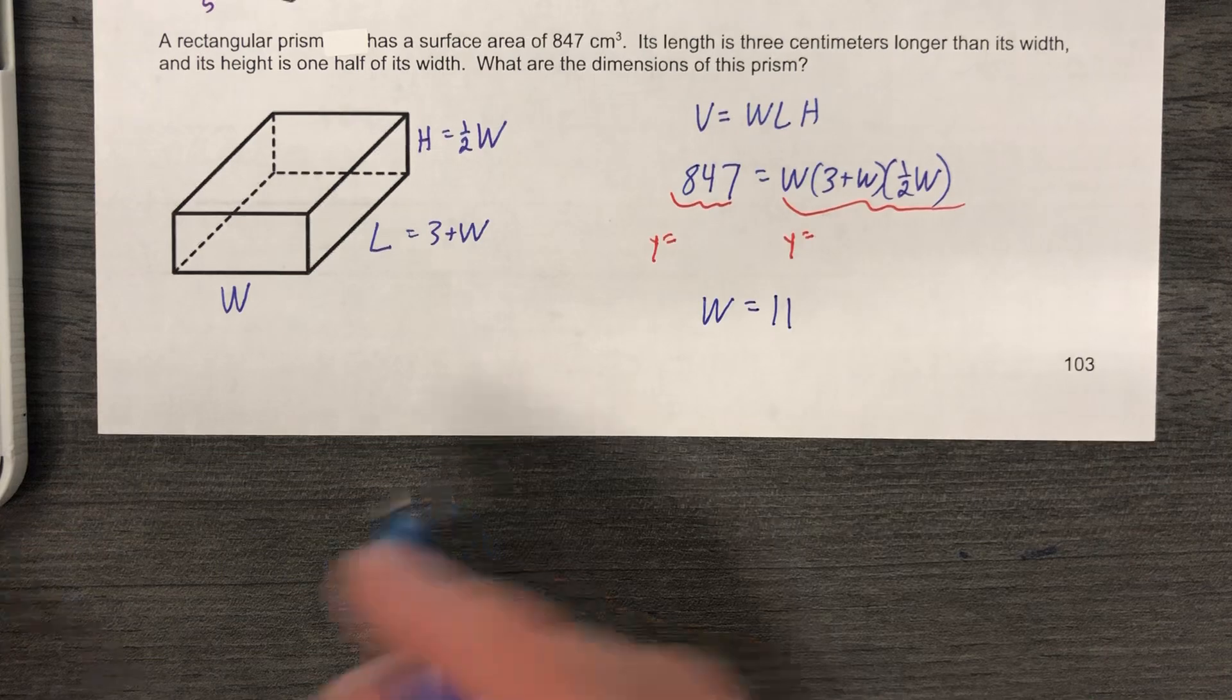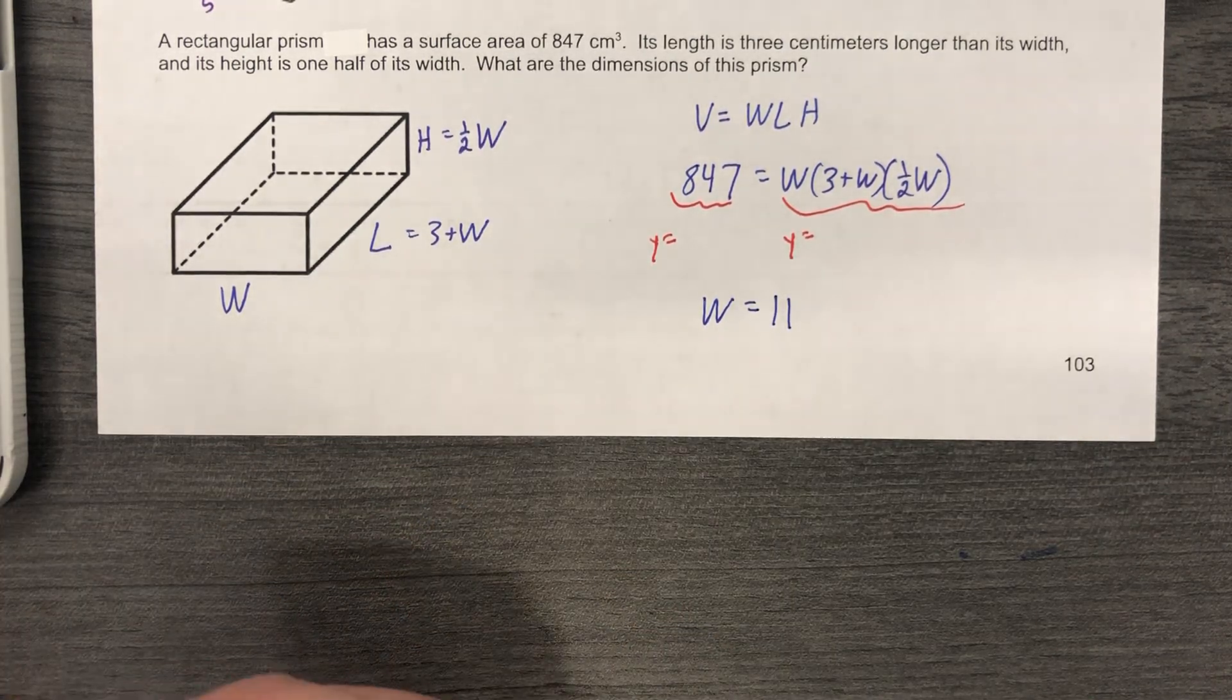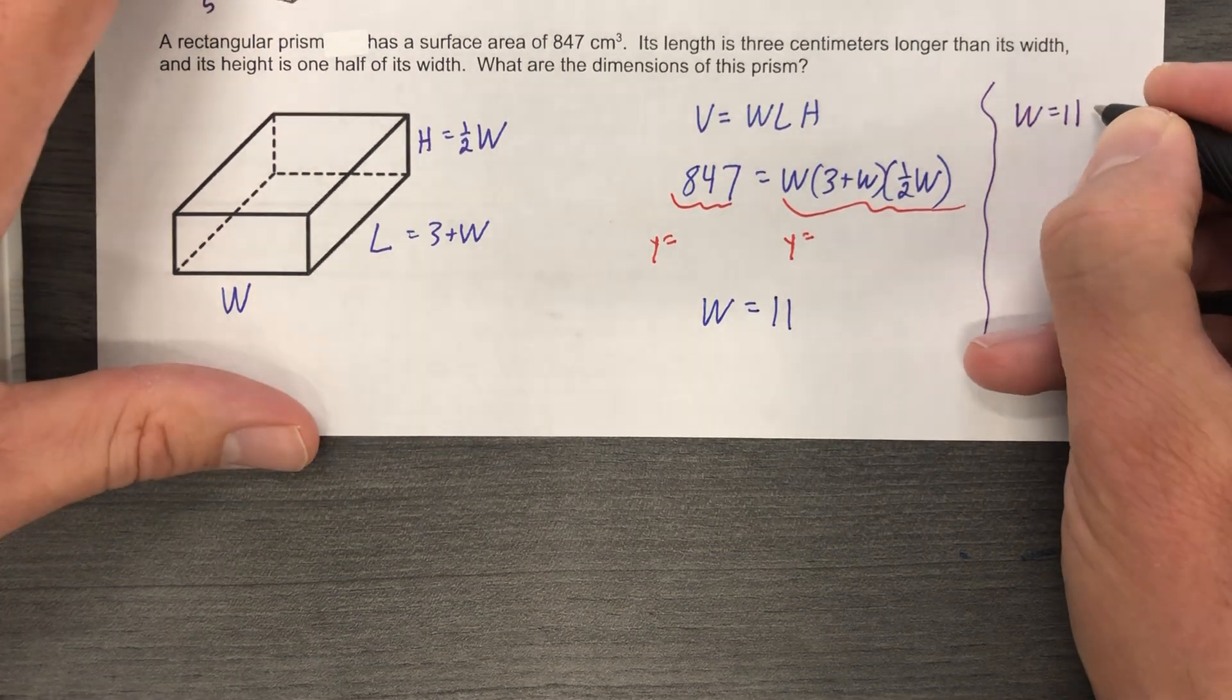So they asked for the dimensions of the prism. So final answer, what color do you want the final answer to be? The purple that looks like the blue? Sure. Why not? So the final answer is 11 centimeters.